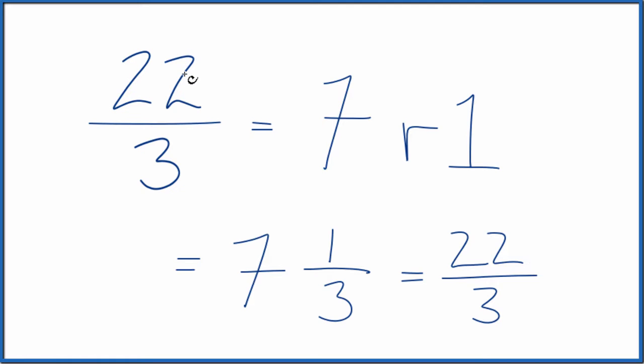So to recap, we divide 22 by 3. We get a whole number and a remainder. The whole number goes here and we have our remainder as the numerator and the original denominator. That's our denominator.